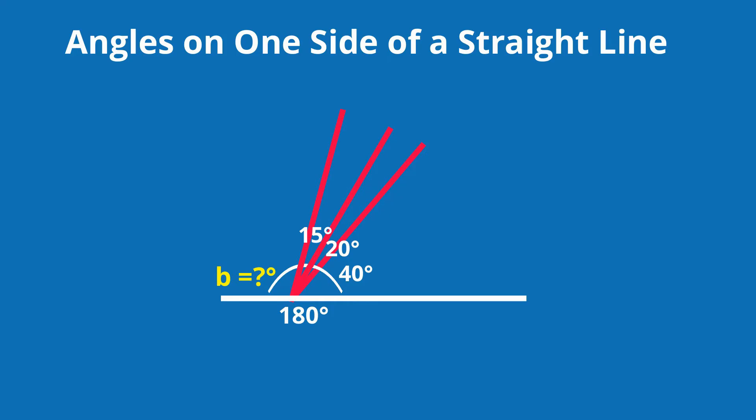Let's take a look at angle B. Angle B equals 180 minus the sum of the other angles. And the sum equals 40 plus 20 plus 15, which equals 75.